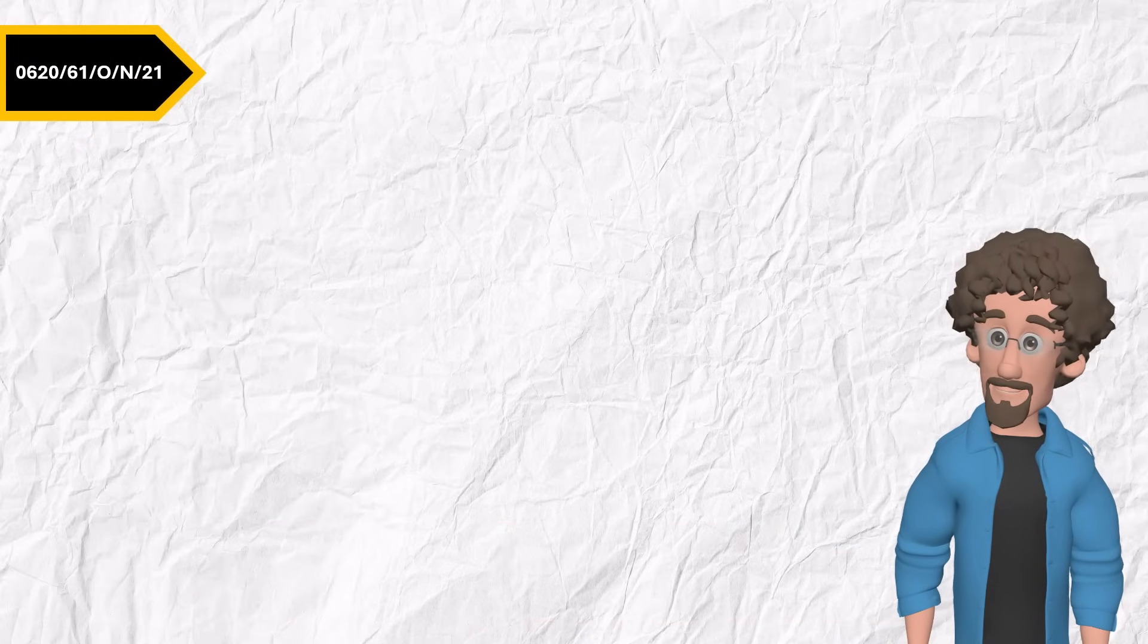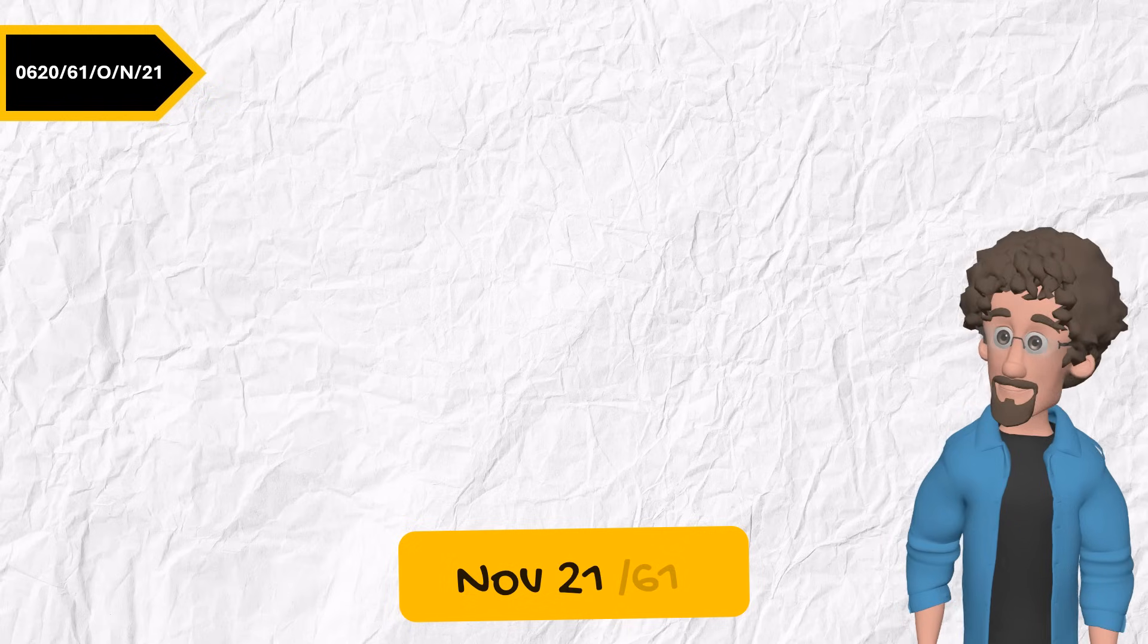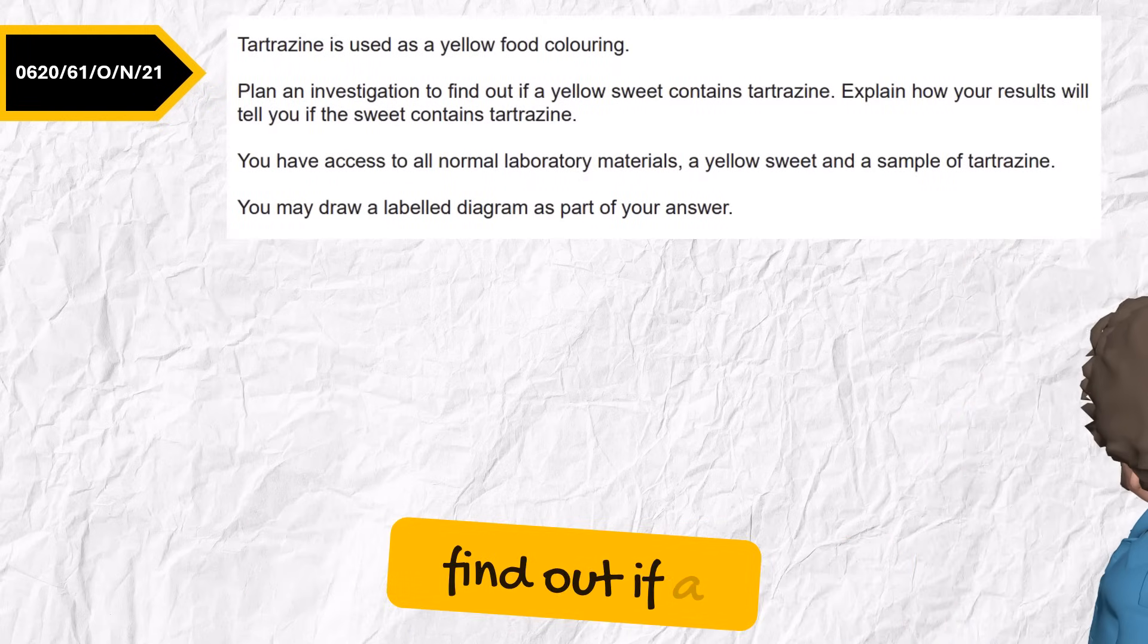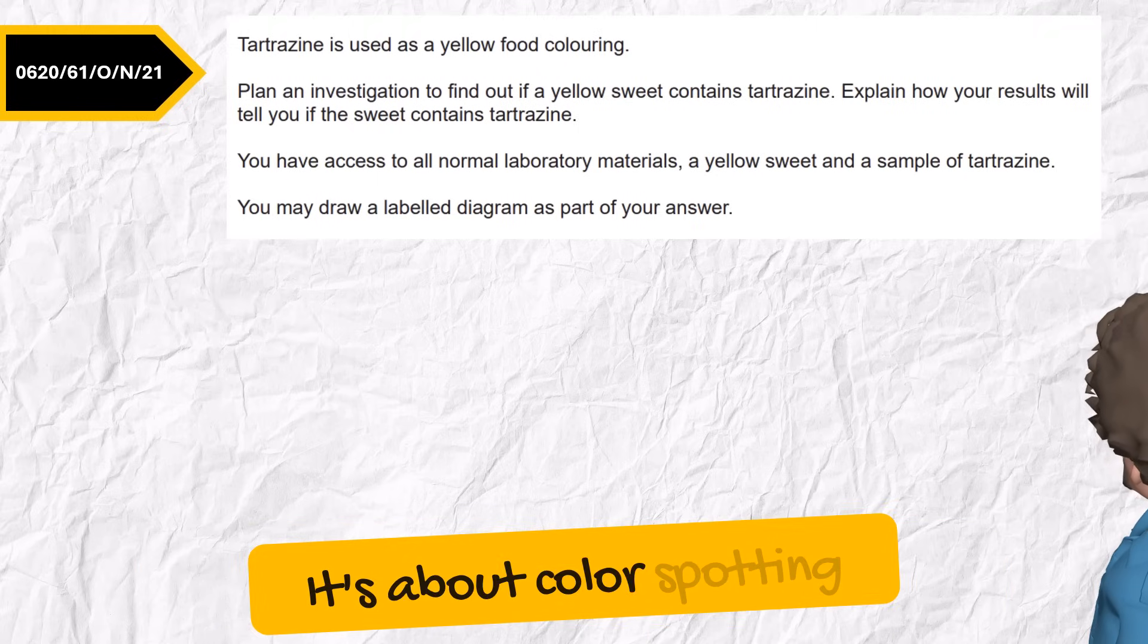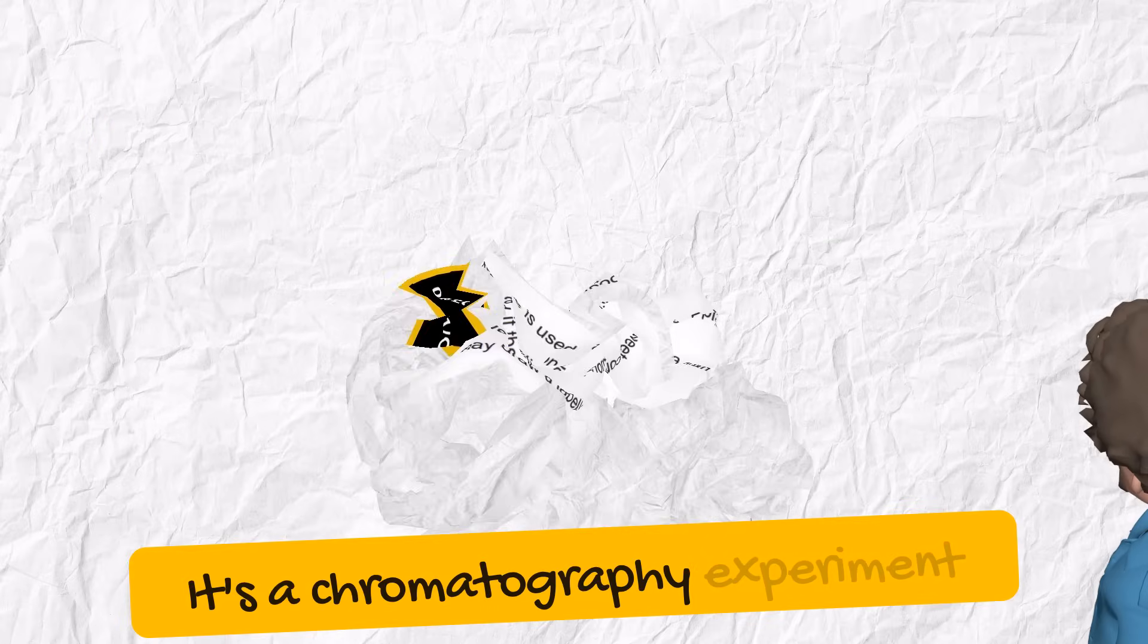Another simple one. November 2021, variant 1. Plan an investigation to find out if a yellow sweet contains tartrazine. This is easy. It's about color spotting. It's a chromatography experiment.